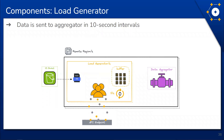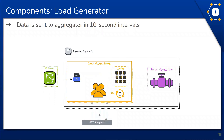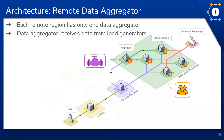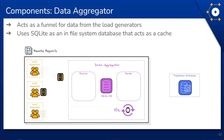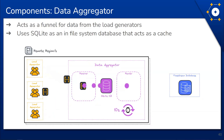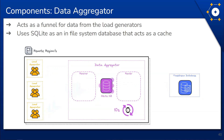Once the test duration ends, Constellation sends a final batch of tests to the data aggregator. In addition to the load generators, each remote region hosts only one data aggregator that receives data from each load generator in their respective remote regions. As each regional load generator sends its completed test results to the data aggregator, they are saved in a SQLite database that acts as a temporary data store — the cache. The aggregator has a single route responsible for parsing and formatting the incoming data from the load generators and saving it to the cache.